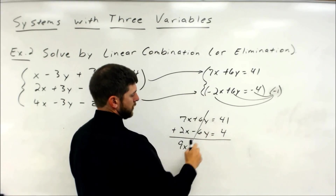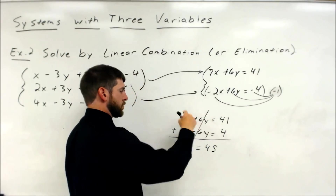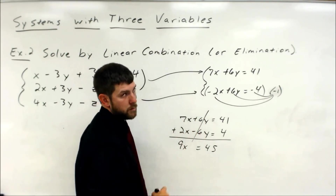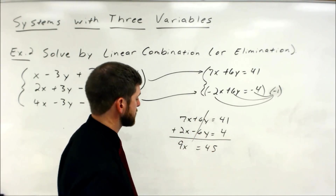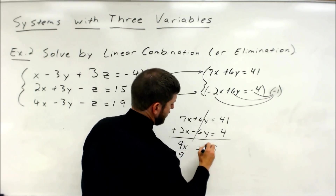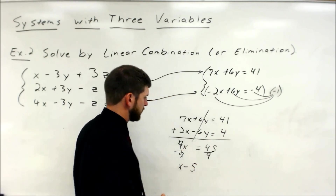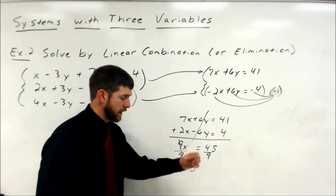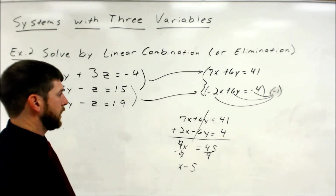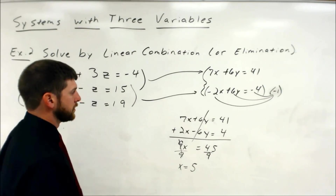Remember, make sure those actually cancel before you cross them out — those two numbers need to be identical with opposite signs. Then divide by 9, and 45 divided by 9 is 5. So x equals 5. Now we've got to work all the way back through and get y and z. We can go back to these two equations and pick either one.